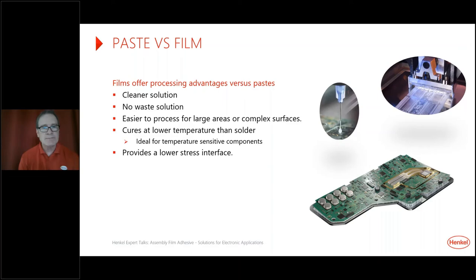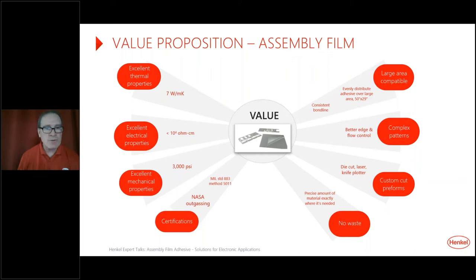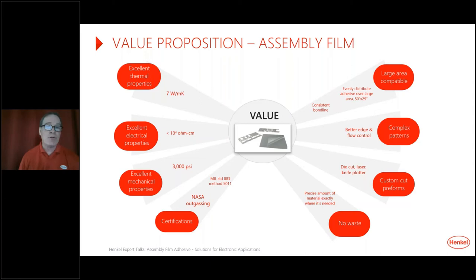To wrap up the value of the film: from the property side, you get excellent thermal, electrical, and mechanical properties. The materials come certified to MIL spec 5011 or NASA outgassing. From the processing side, you can evenly distribute material over large areas and get consistent bond lines with very good flow control. Custom cut preforms match your designs regardless of how complex they are, and that comes with no waste because it's exactly cut to match your design.